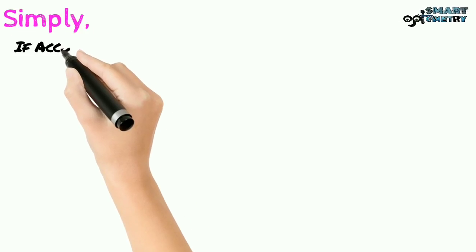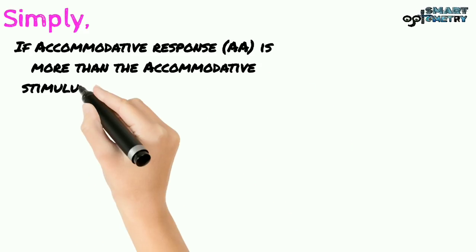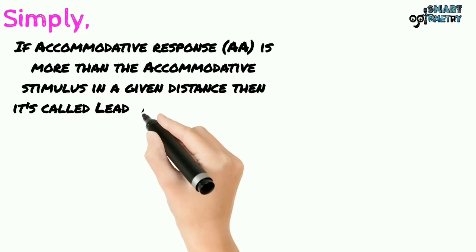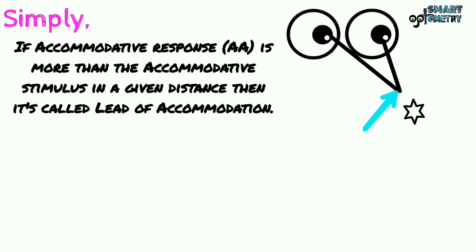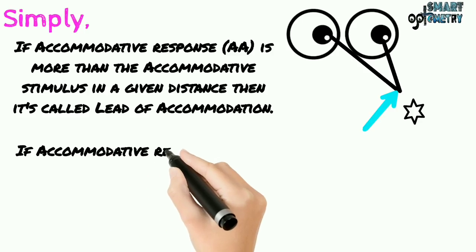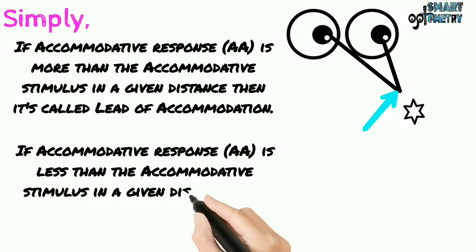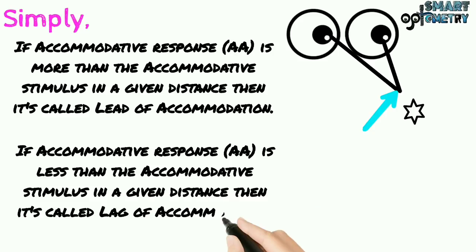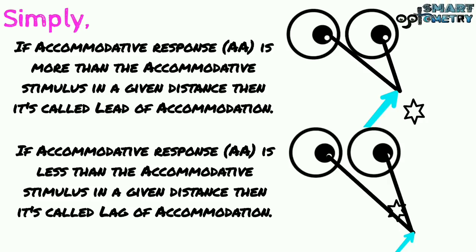Simply, if the accommodative response or amplitude of accommodation is more than the accommodative stimulus at a given distance, it is called lead of accommodation — our eyes focus in front of the object. If the accommodative response is less than the accommodative stimulus, it is called lag of accommodation — our eyes focus behind the object.